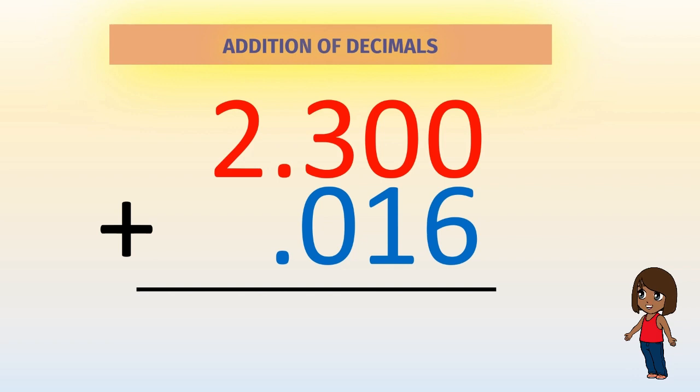Remember, adding zeros at the end of a number to the right of a decimal point does not change its value.